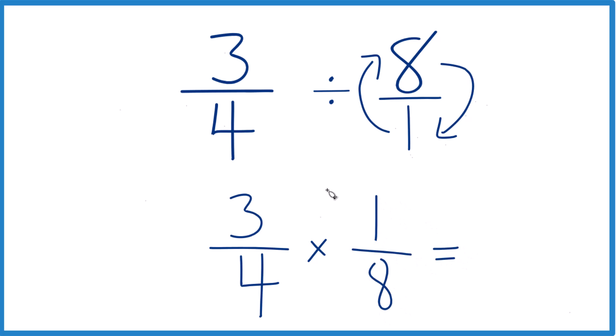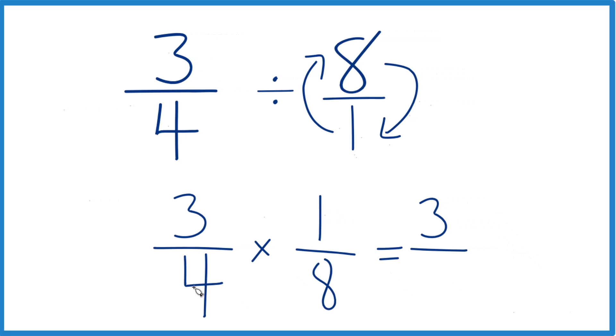Now with fractions, we multiply the numerators: three times one, that's three. Then the denominators: four times eight, that's thirty-two.